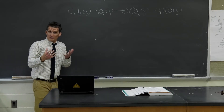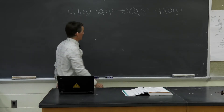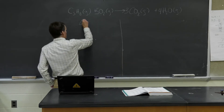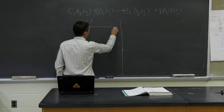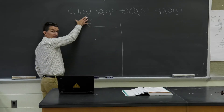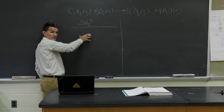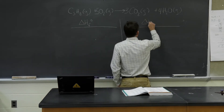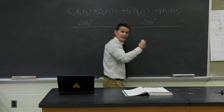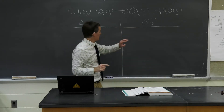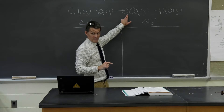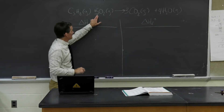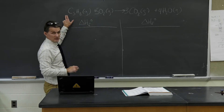Now I want the overall enthalpy change for this reaction. I'm going to take the standard enthalpies of formation of my reactants and subtract them, and the standard enthalpies of formation of my products and keep those as-is. I'll remember to multiply CO2 by three, H2O by four, O2 by five, and propane I don't need to multiply.